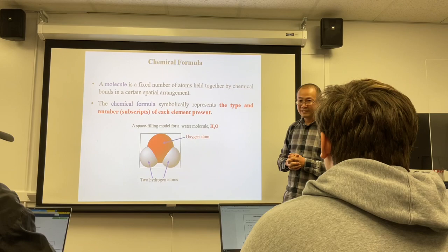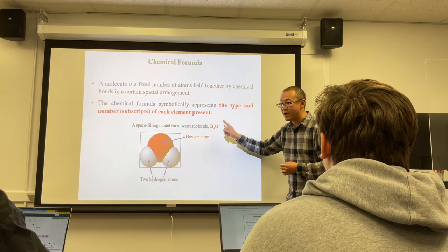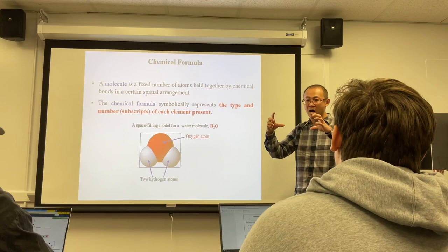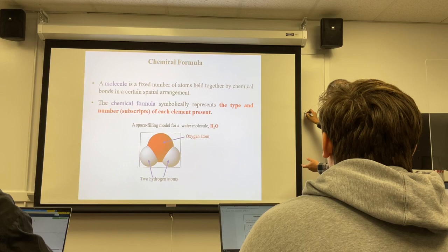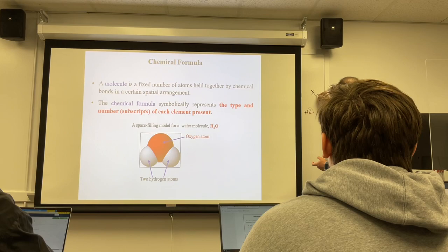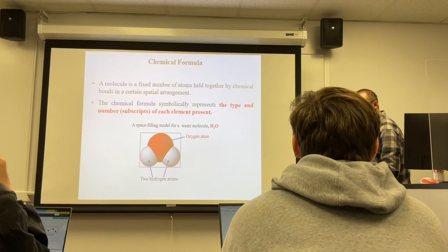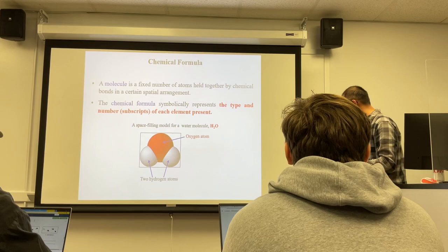When you take quizzes and exams, make sure you write the numbers in formulas as subscripts. On Blackboard, when you write a formula like H₂O, highlight the 2 and click the subscript function (similar to a word processor). Please make sure to use proper subscript formatting in chemistry.